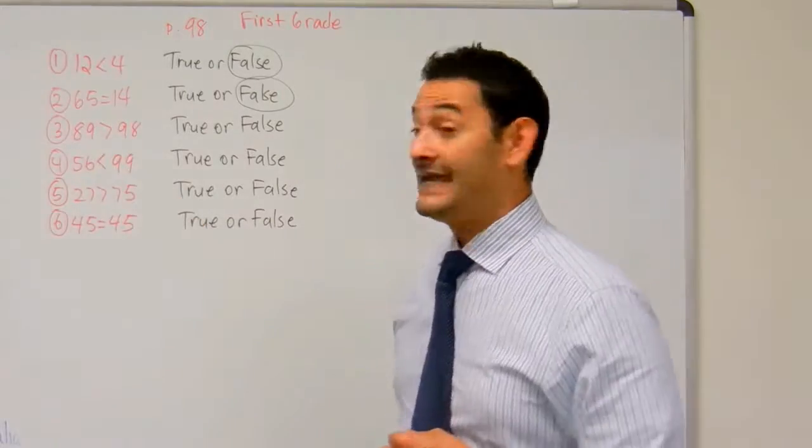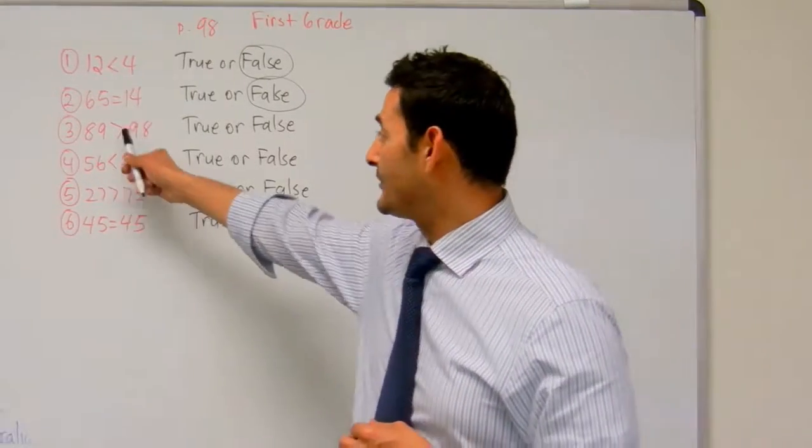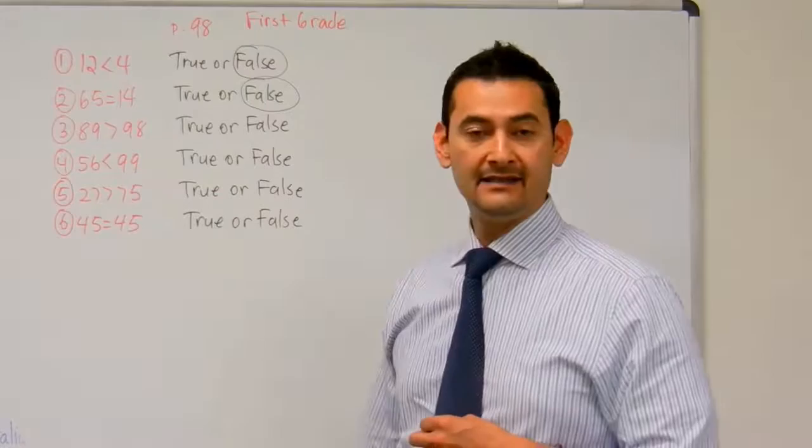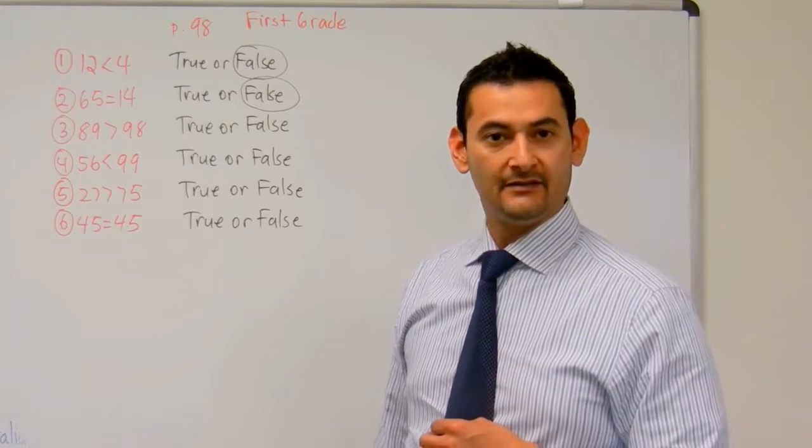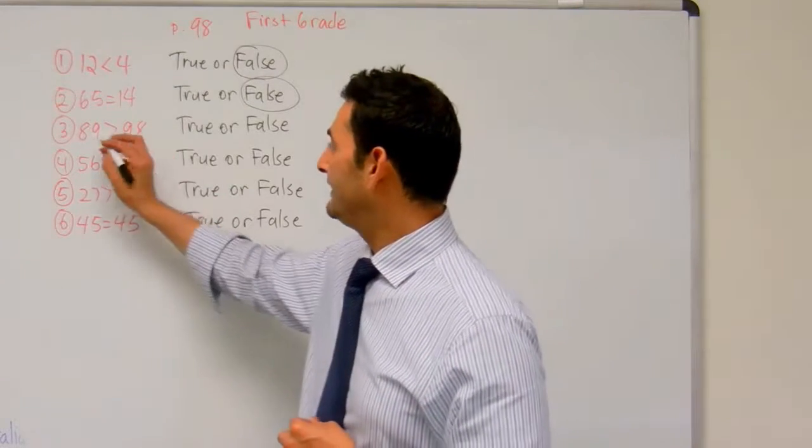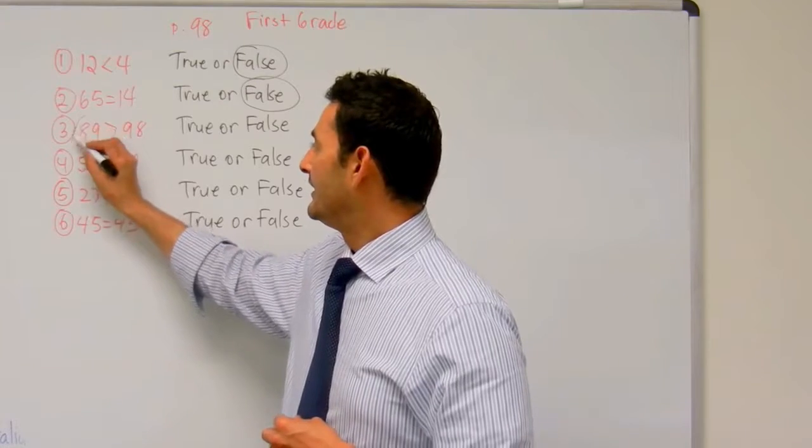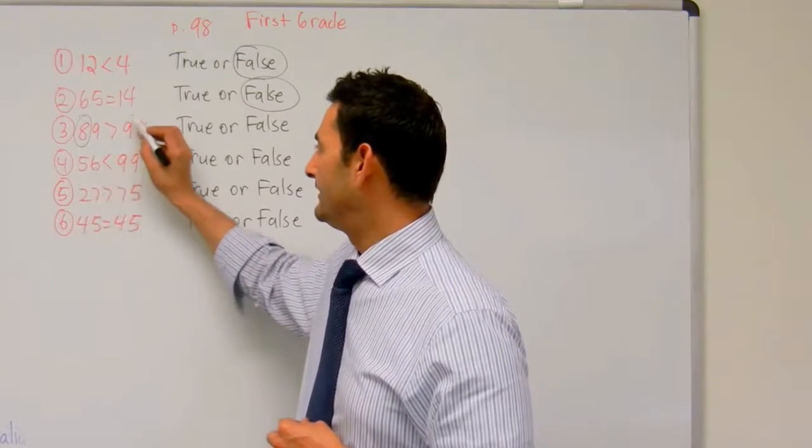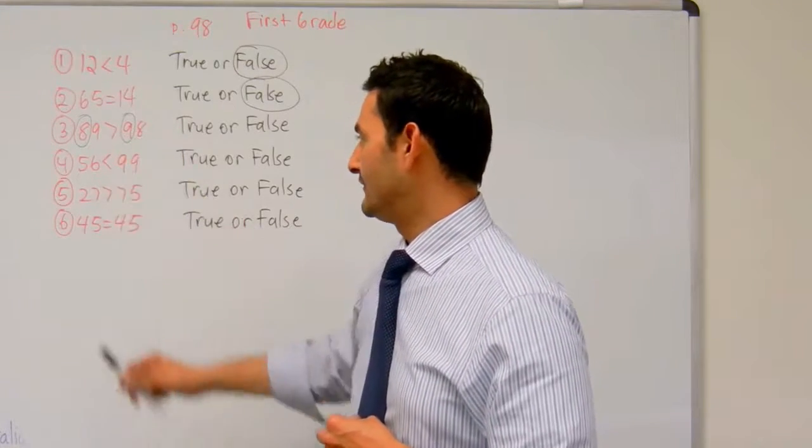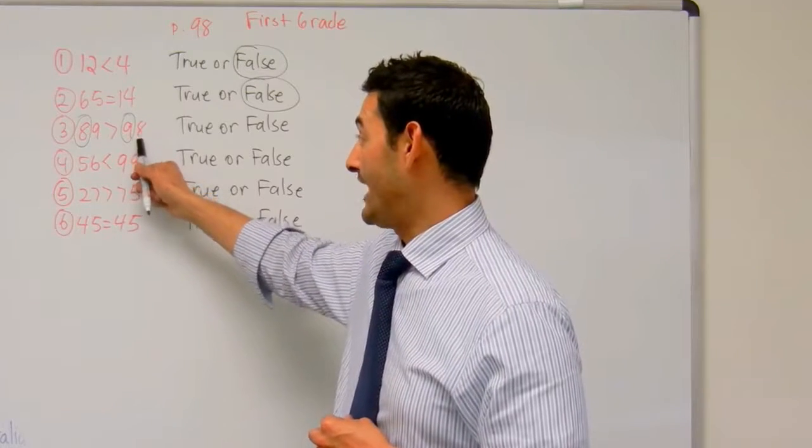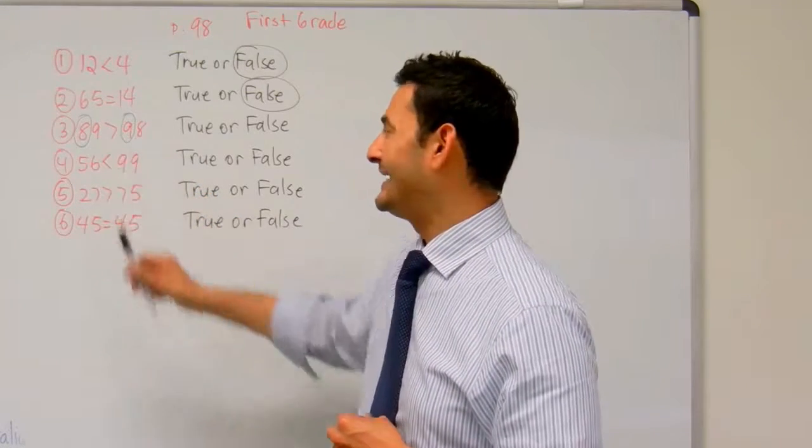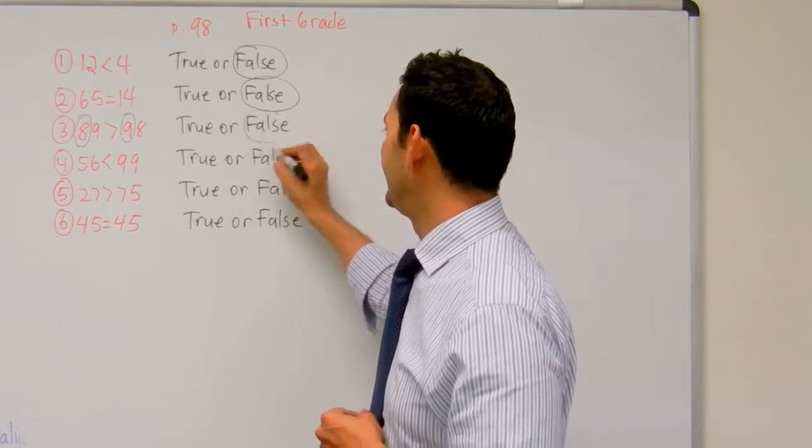Number 3. 89 is greater than 98. Is that true? Nope, it's not true. Let's take a look here. Here we have 8 bundles of 10. Here we have 9 bundles of 10. This is actually greater, so this is smaller. So 89 is not greater than 98. That's false.